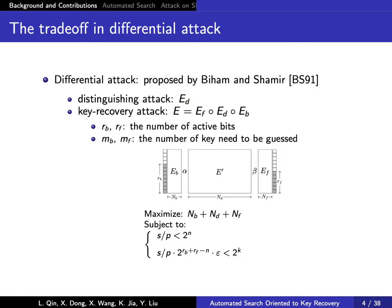Differential attack proposed by Biham and Shamir is one of the most successful cryptanalysis techniques. In a differential attack, an attacker's goal is either to distinguish E from a random function or to recover the master key based on the differential and partial decryption technique. When searching for a differential distinguisher, the attacker aims at differentials that cover the highest number of rounds or with maximized probability.